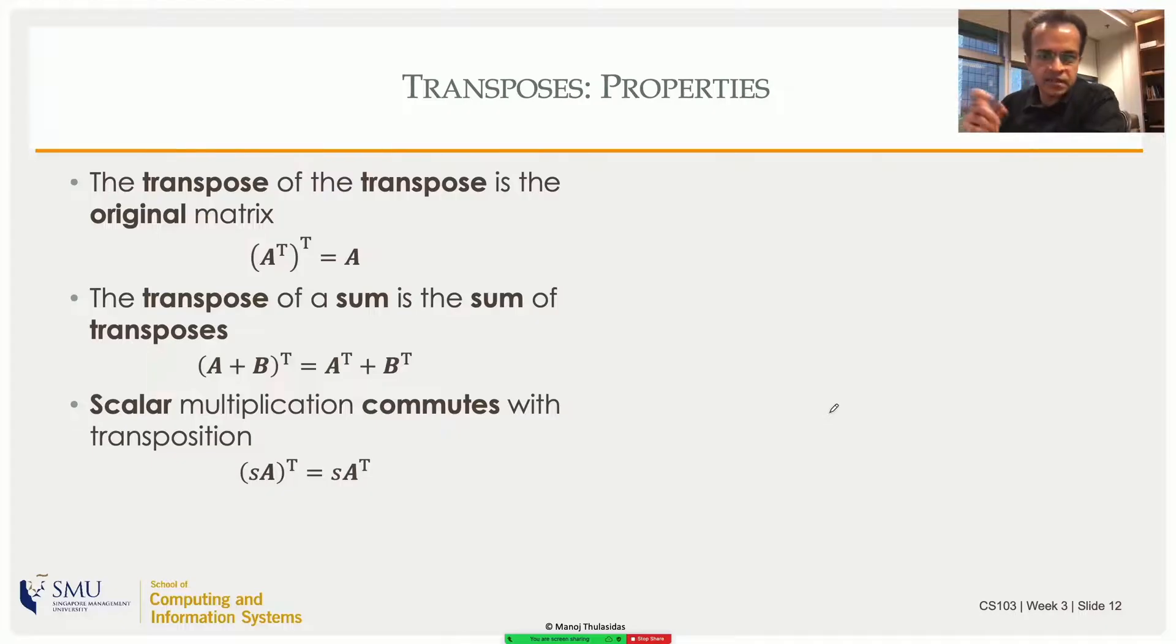Then the operation of scalar multiplication and the operation of transposition or taking the transpose can be commuted. So you can multiply first and then take the transpose or transpose first and then take the scalar multiplication. So here I am scaling first and then taking the transpose or the transposition happens first, and after that I'm scaling.